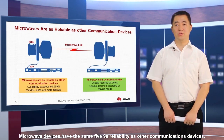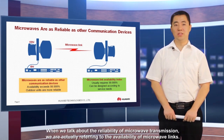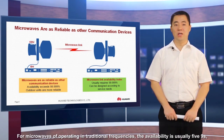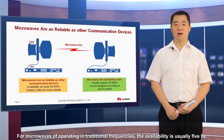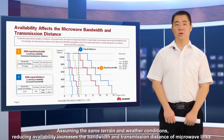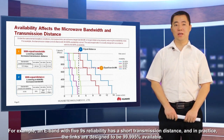Microwave devices have the same five nines reliability as other communications devices. To handle various outdoor environments, outdoor microwave units have an even higher requirement for reliability. When we talk about the reliability of microwave transmission, we are actually referring to the availability of microwave links. For microwaves operating in traditional frequencies, the availability is usually five nines, but the availability index may be adjusted based on service requirements. Assuming the same terrain and weather conditions, reducing availability increases the bandwidth and transmission distance of microwave links. For example, any band with five nines reliability has a short transmission distance, and in practice, links are designed to be 99.995% available.